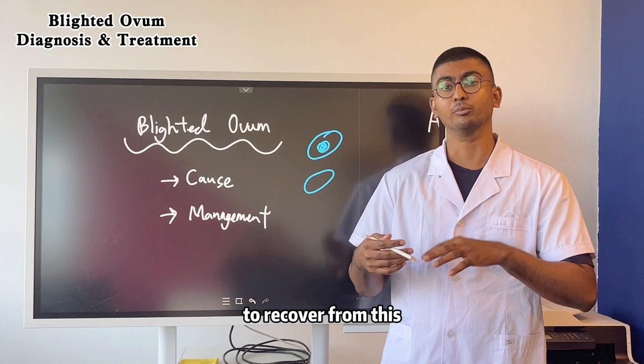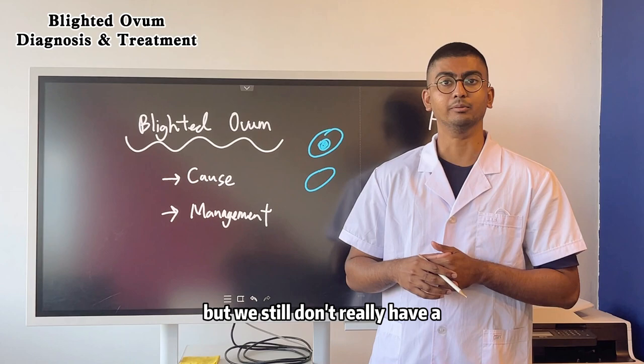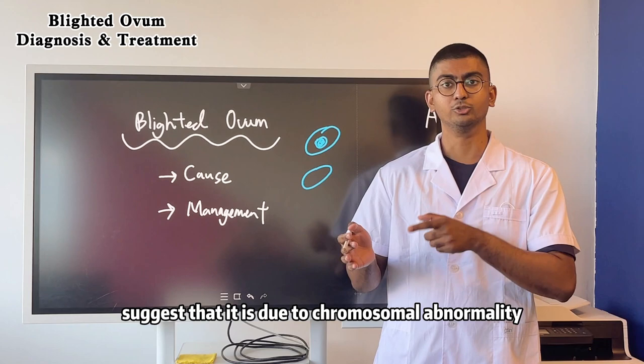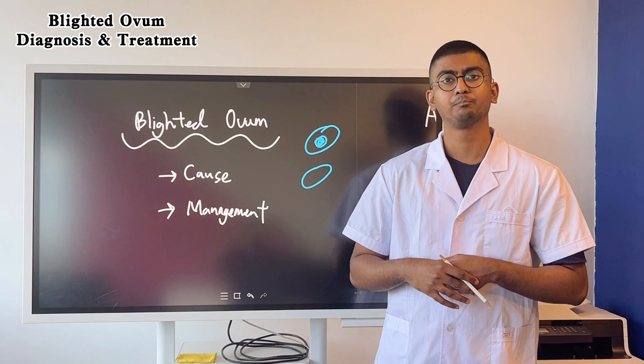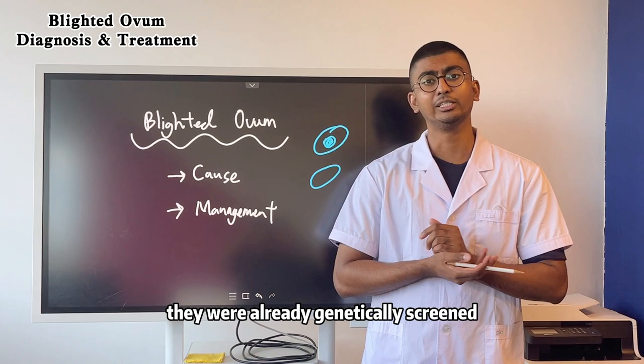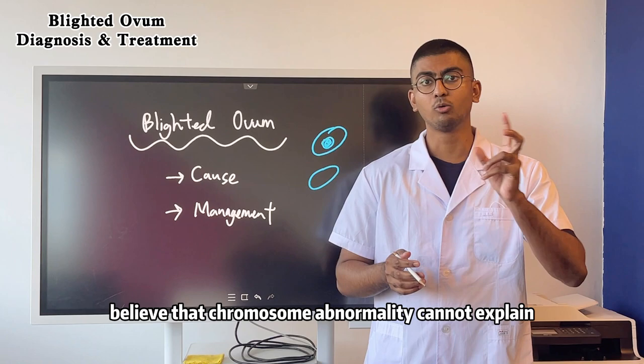There are many theories and studies being done to understand why blighted ovums happen. We still don't have a clear idea, and many people suggest it is due to chromosomal abnormality. However, we cannot say for sure, because studies have shown that couples who were genetically screened before pregnancy and had no chromosomal defects still ended up developing a blighted ovum. So we believe chromosomal abnormality cannot explain all blighted ovums — it may explain some of them.